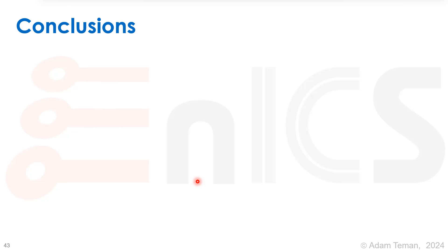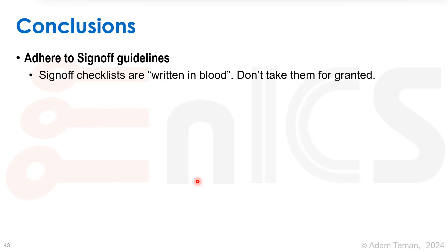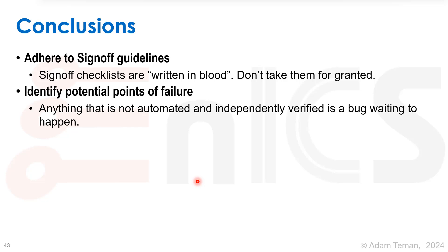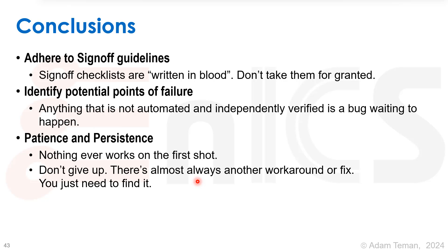What are the conclusions? First and most importantly: adhere to sign-off guidelines. Those sign-off checklists — whether at your workplace or in an academic environment — are written in blood. Don't take them for granted. We cut corners in several places, and if you don't follow your sign-off checklist, things are not going to work. Second: identify potential points of failure. There were several single points of failure that weren't automated or independently verified — bugs waiting to happen at every stage of the chip design flow.